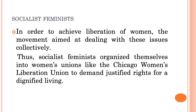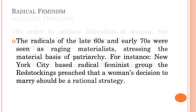In order to achieve liberation of women, the movement aimed at dealing with these issues collectively. These feminists organized themselves into women's unions like the Chicago Women's Liberation Union to demand justified rights for a dignified living. The third variant of the second wave of feminism was radical feminism.